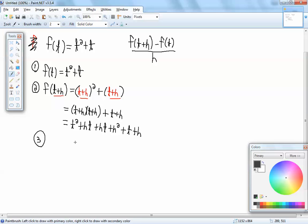Now, step three. We want to plug in F of T from step one, and F of T plus H from step two into our formula. So we've got our formula, F of T plus H minus F of T over H.